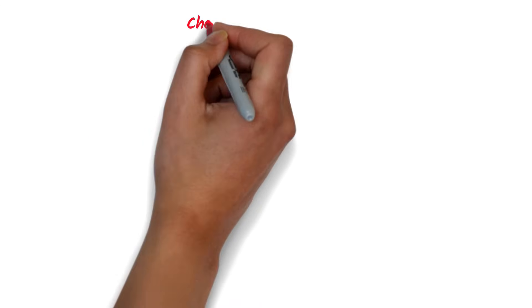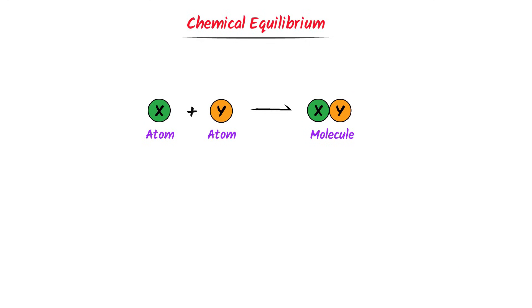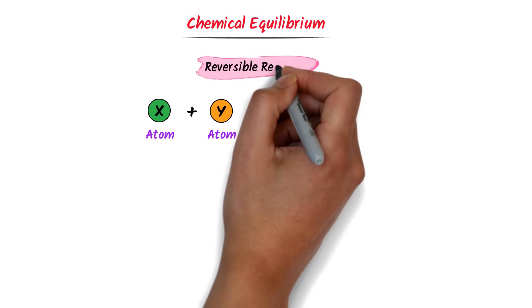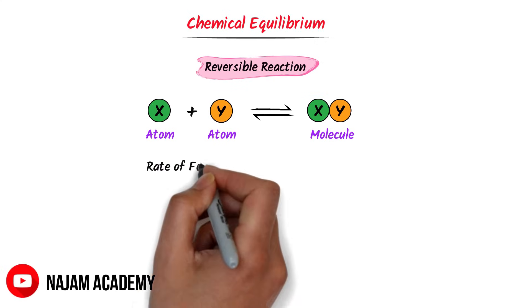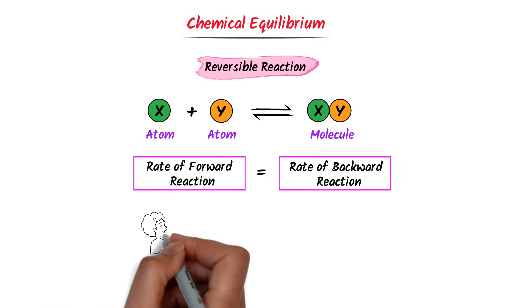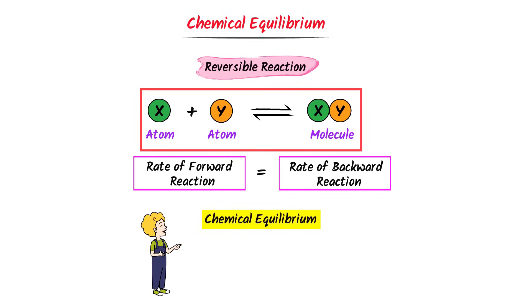Firstly, let me teach you the easy concept of chemical equilibrium. Consider an atom X and an atom Y. X and Y atoms react together to form an XY molecule, while this XY molecule breaks down to form X atom and Y atom. So this is a reversible reaction. When the speed or rate of the forward reaction becomes equal to the speed or rate of the backward reaction, this stage is called chemical equilibrium.